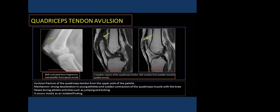Quadriceps tendon avulsion: avulsion fracture of the quadriceps from the upper pole of the patella is seen on X-ray as fragmentation with a bony fragment. On MRI there is disruption of the quadriceps tendon with fragmentation of the upper pole of the patella.